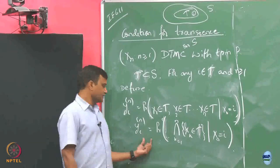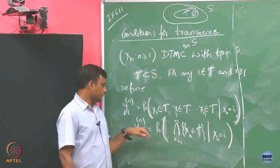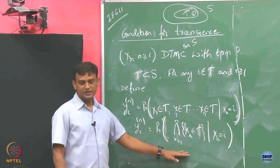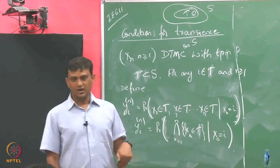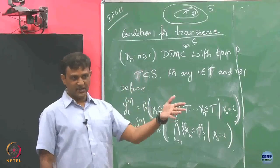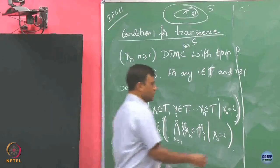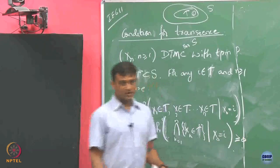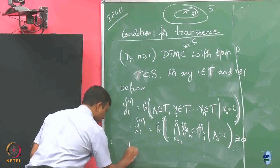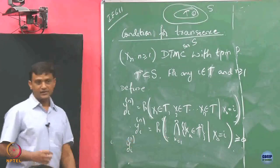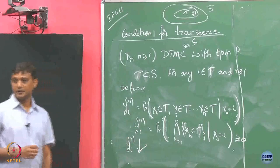Now let us look at this for a given i as a sequence in n. If I increase n, what is going to happen to this probability? It is going to go down, because I am asking it to stay, continue to stay in the same class again in the next round also. These values are all lower bounded by 0 and upper bounded by 1. So what can I say about this sequence? This is monotonically decreasing and bounded. So it should have a limit.